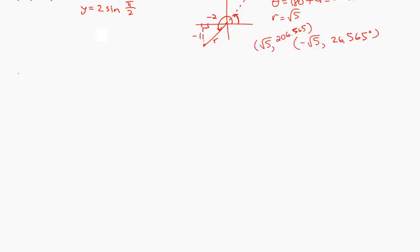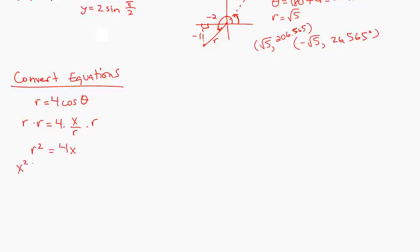We also talked about converting equations. And so let's say we had R = 4cos θ. The trick is to use R's to switch the R and the theta into X's and Y's. So something like this, we could replace cosine of theta with X/R, multiply both sides by R.